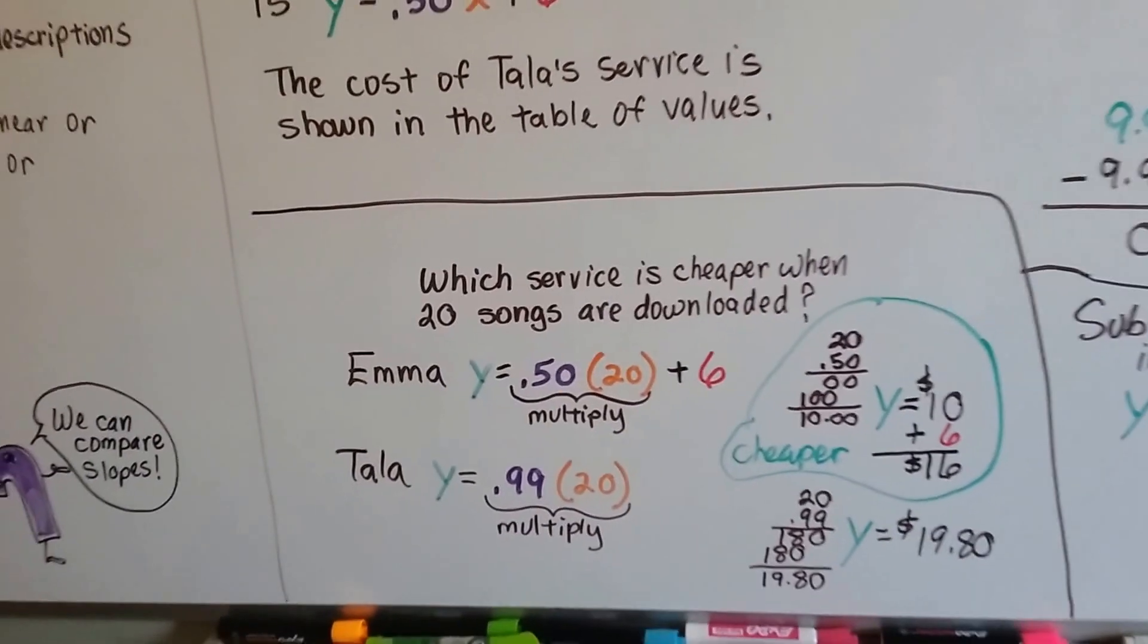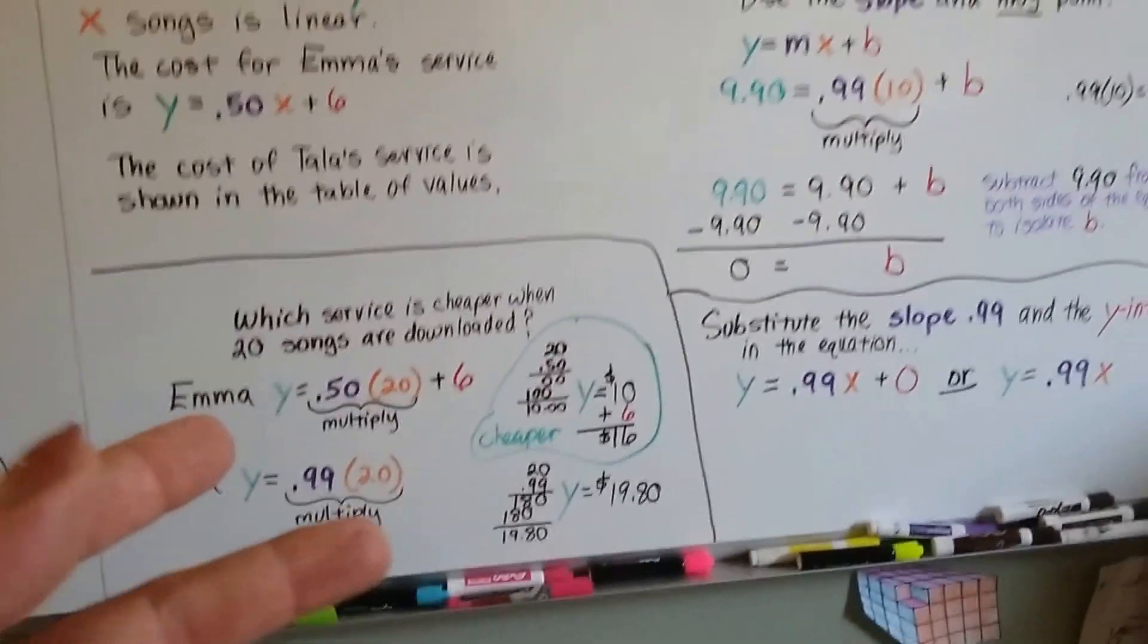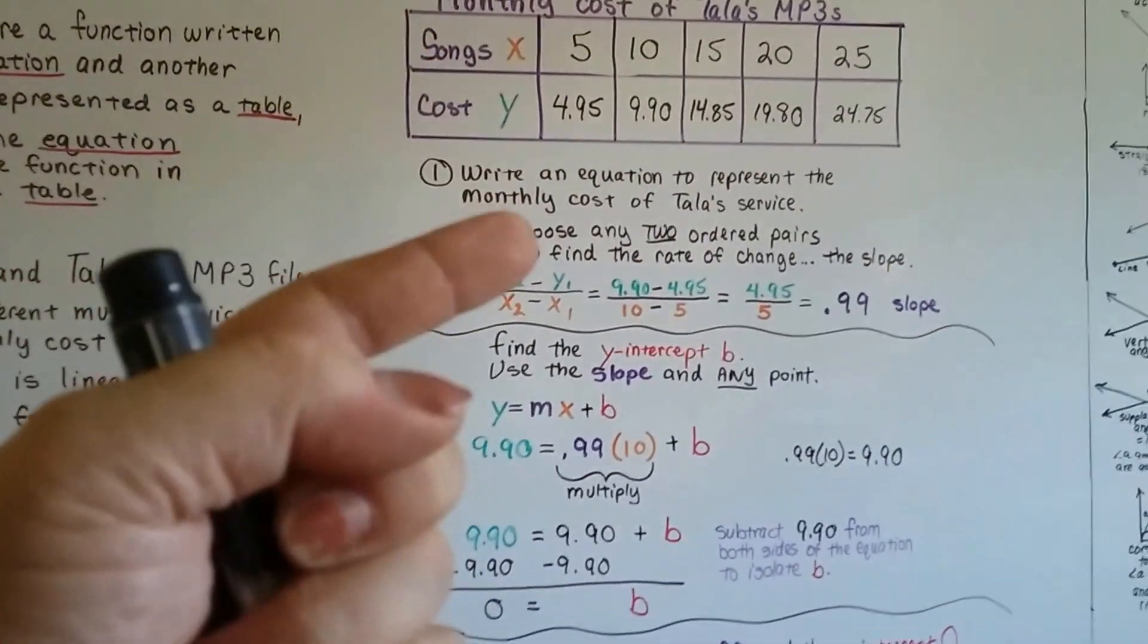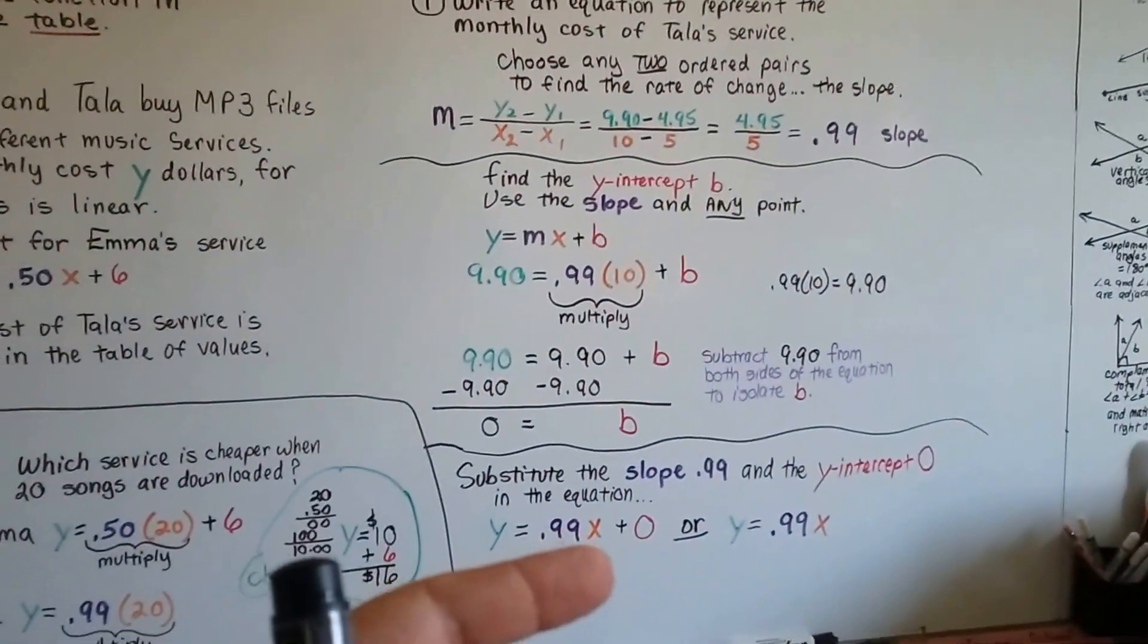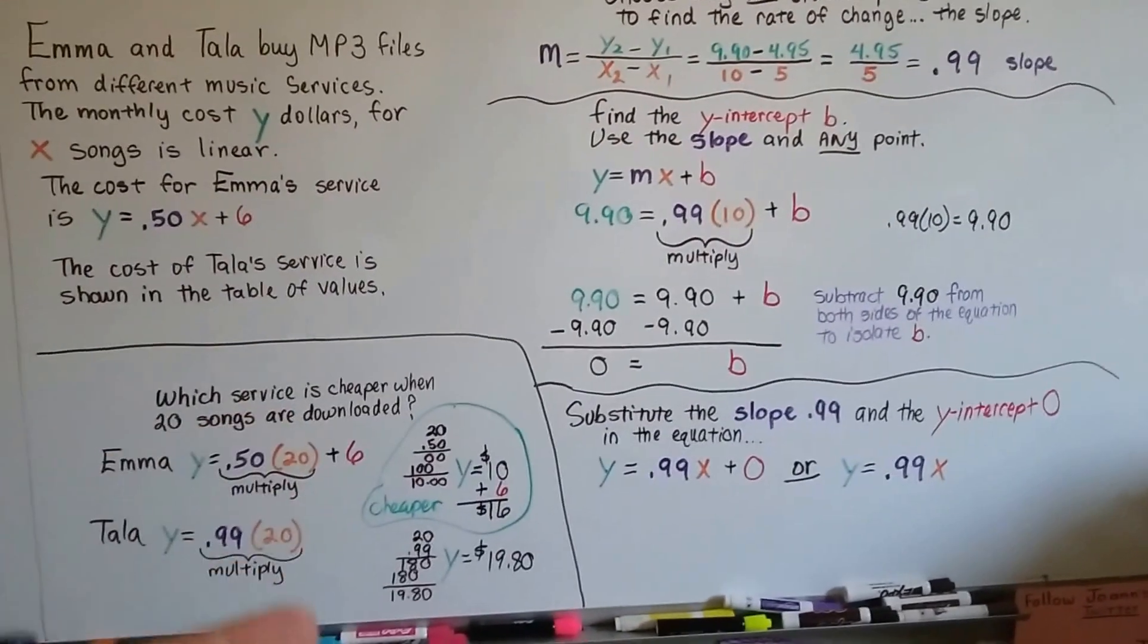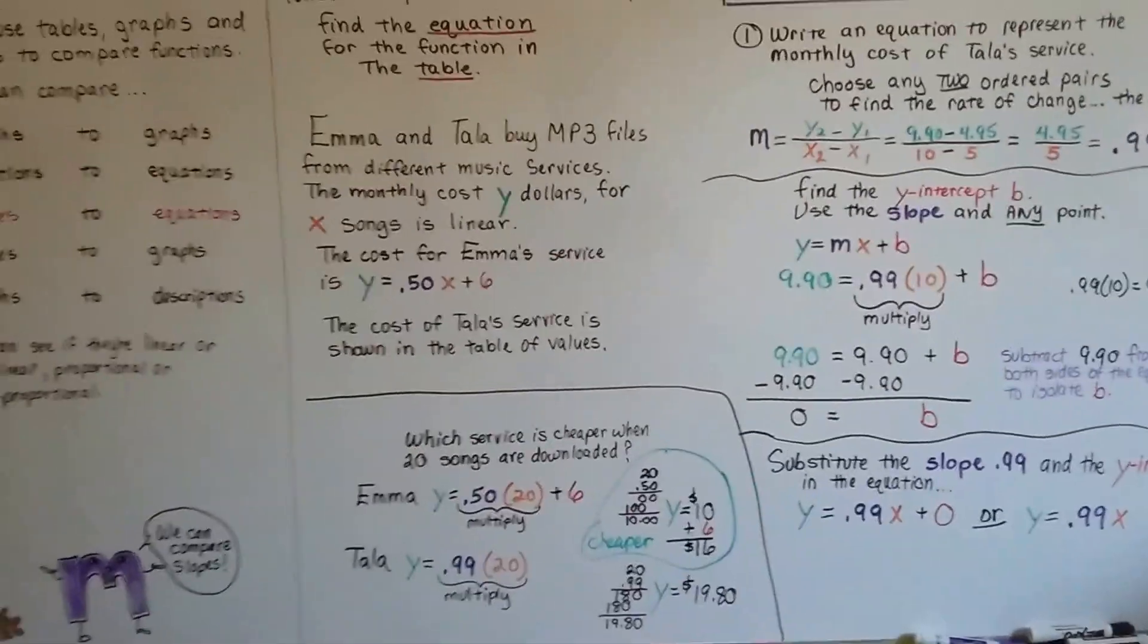We compared a table of values to an equation. What we did was, we found the equation from that table of values. We found the slope. We found the y-intercept by isolating b to one side. We plugged it into the equation, and we were able to actually compare two amounts.